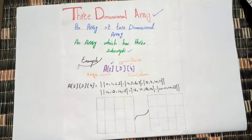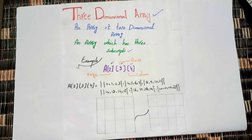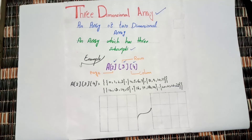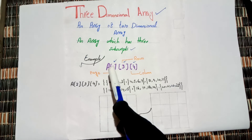In a three dimensional array we have three subscripts: one, two, and three. The first one is the page, the second one is the row, and the third one is the column. The page refers to how many two-dimensional arrays we are making.